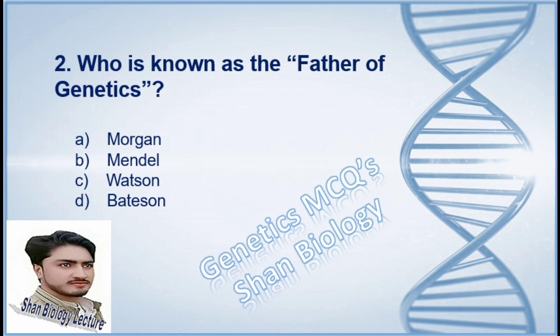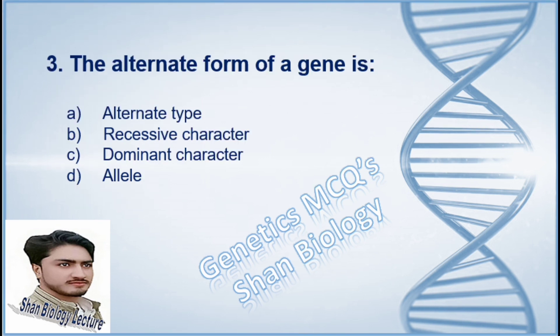Question 2: Who is known as the father of genetics? Option A Morgan, option B Mendel, option C Watson, option D Bateson. The correct option is B, Mendel. Question 3: The alternate form of a gene is — option A alternate type, option B recessive character, option C dominant character, option D allele.